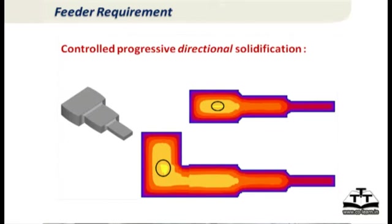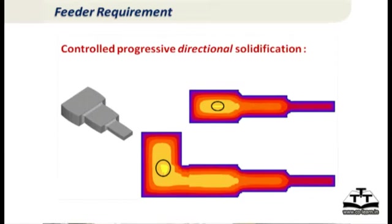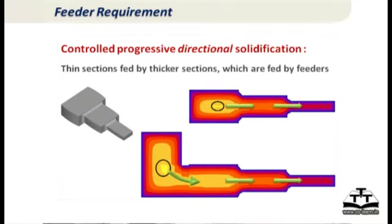We want to achieve controlled progressive directional solidification. This means the combination of part design and riser or feeder design should be such that thin sections are fed by thicker sections, which are in turn fed by feeders. The green arrows show the feed path from the feeder to thick sections to thinner sections in the casting.